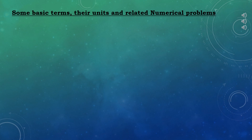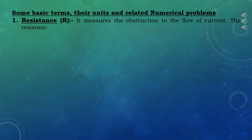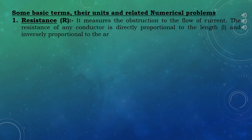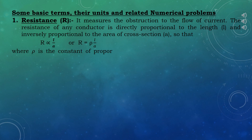Every year, one numerical problem comes from this topic in the final examination. The first term is resistance, represented by capital R. It measures the obstruction to the flow of current. The resistance of any conductor is directly proportional to the length (l) and inversely proportional to the area of cross-section (a), so R is proportional to L/A, or R equals ρL/A, where ρ is the constant of proportionality called specific resistance or resistivity.